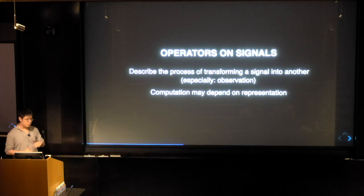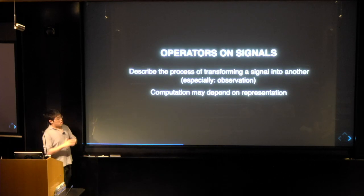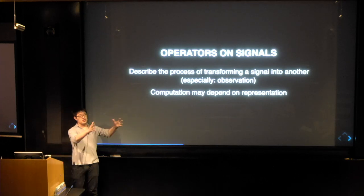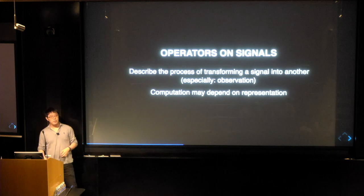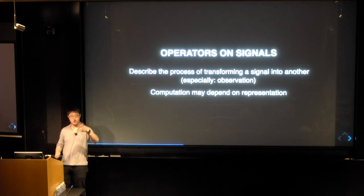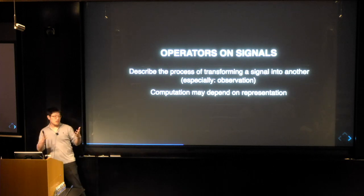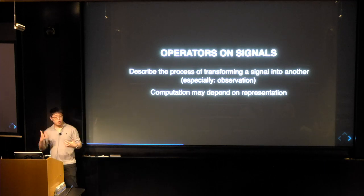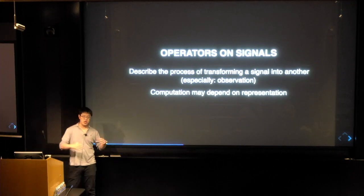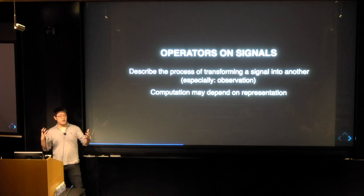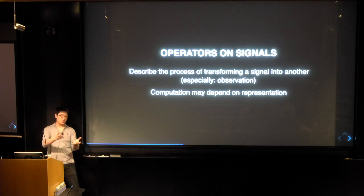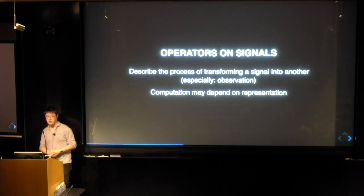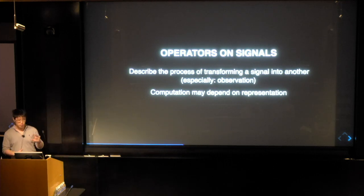Just a vocabulary point before we go on: I'm going to also talk about operators on signals. An operator is just a thing that takes a signal and transforms it to another — it might be a differential operator: I take a function and differentiate it. Generally, if I imagine there's some signal and I observe it, then that might be an operator. The operator describes the physical process of observing it — it might depend on the instrument you use, the method of observation, and so on. We're not going to talk too much about this today.